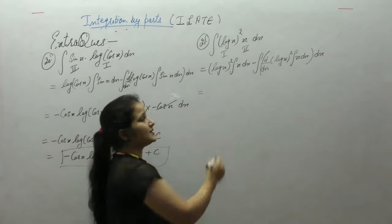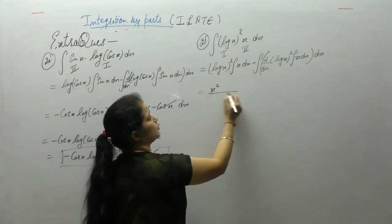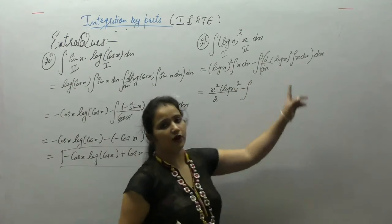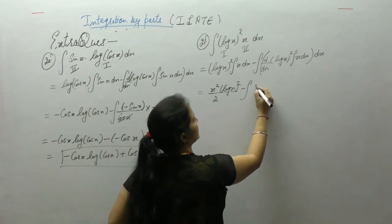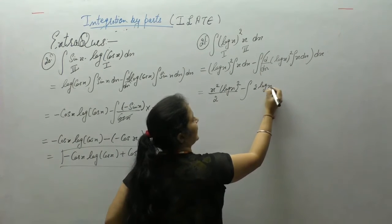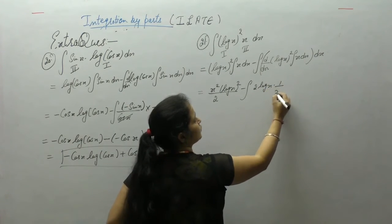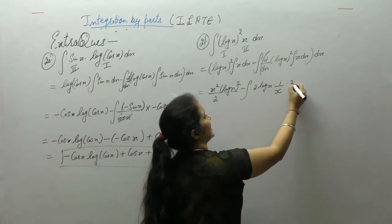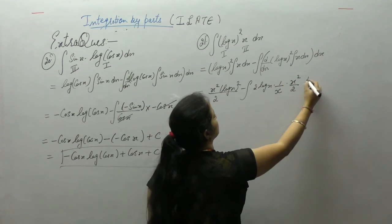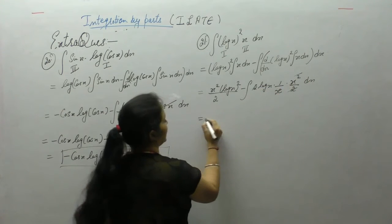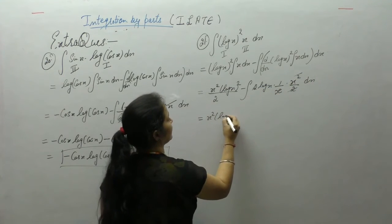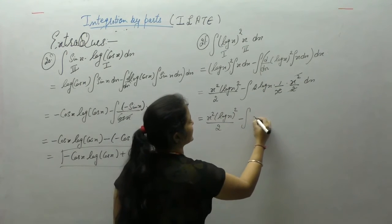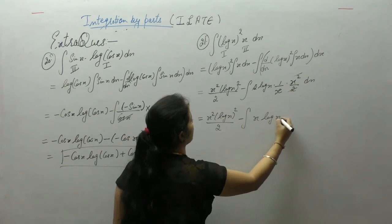Integral of x is x² by 2. Derivative of [log(x)]² is 2·log(x) times 1 upon x. Integral of x is x² by 2. This gives x²·[log(x)]² upon 2, minus integral of x·log(x).